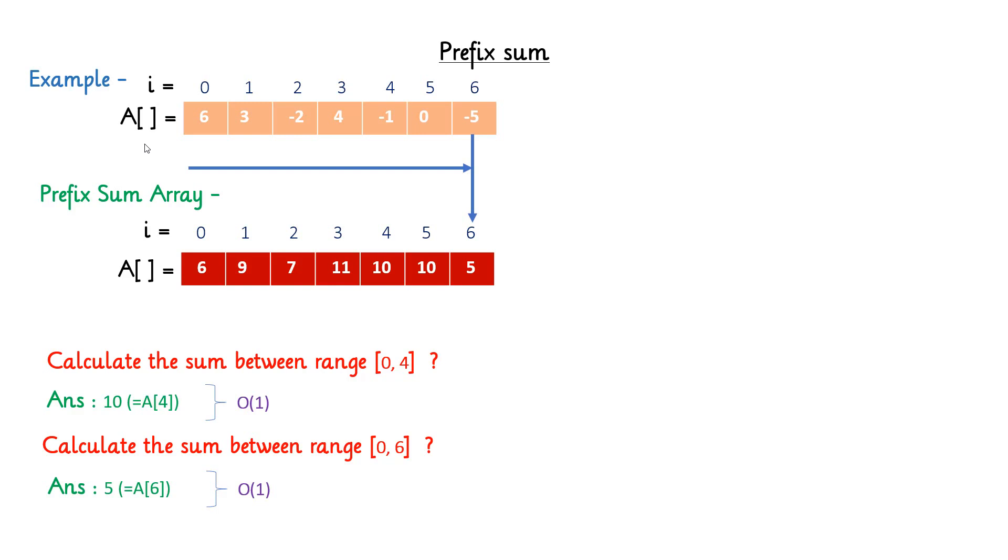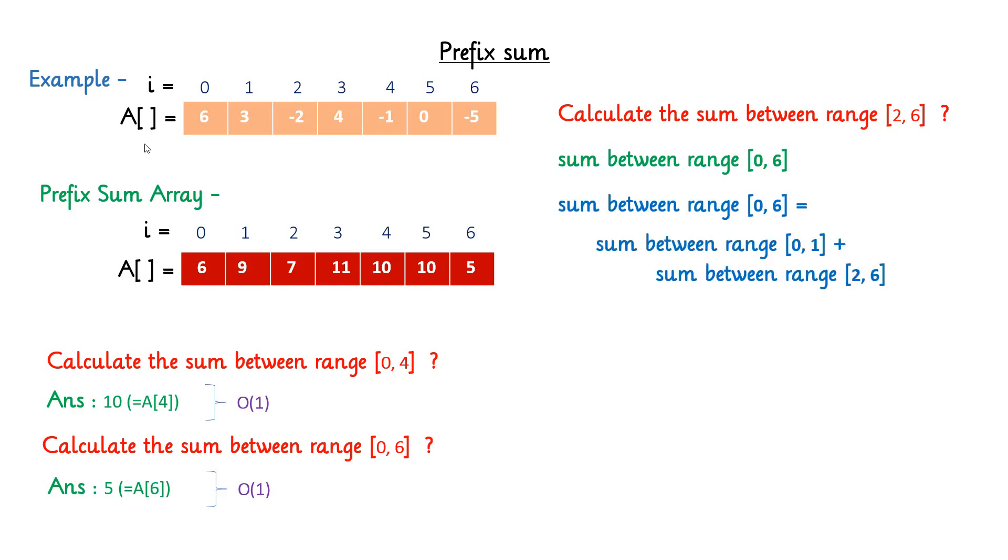So far, we have seen queries which start from 0 index. So it was very easy to calculate the sum. Let's take some complex query and try to calculate the sum between range 2 to 6. We don't have pre-calculated sum from 2 to 6, but we know the sum from 0 to 6 which can be divided or expressed into two parts. Sum between range from 0 to 6 equals sum between range from 0 to 1 plus sum between range from 2 to 6.